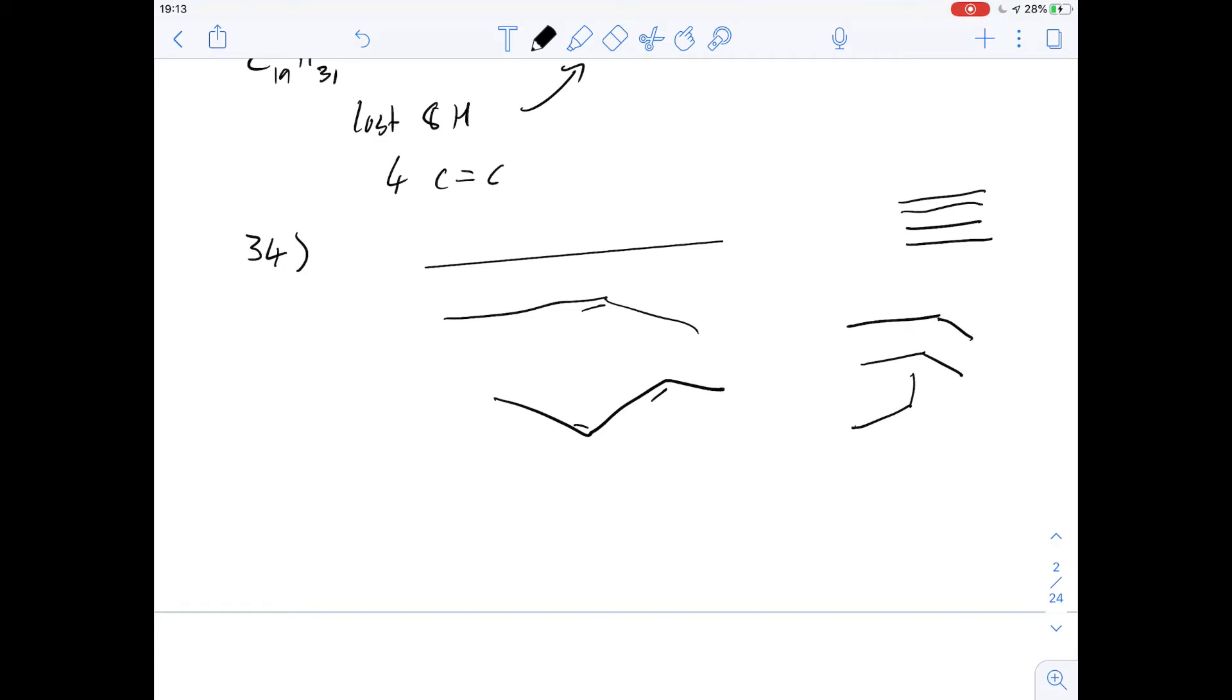So that means reducing the number of double bonds in the hydrocarbon chain would mean that the chain gets a bit straighter and that you get a better tessellation between all the different molecules. So the answer for this one is going to be C.